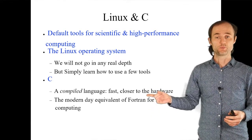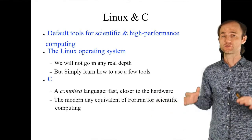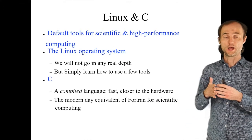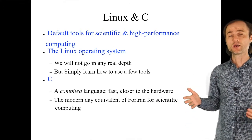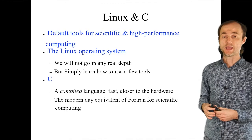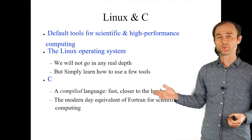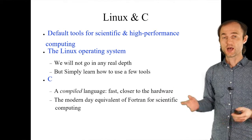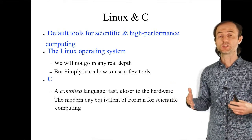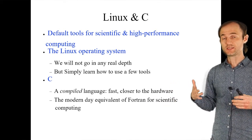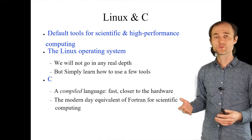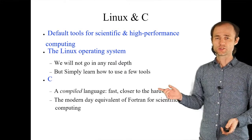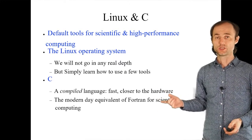C is a very fast compiled language, close to hardware — it allows you to control the locations of everything in memory. It is basically replacing Fortran for high-performance computing. C and C++ are what's used to create operating systems like Linux and Android, so it's a really good language to know.